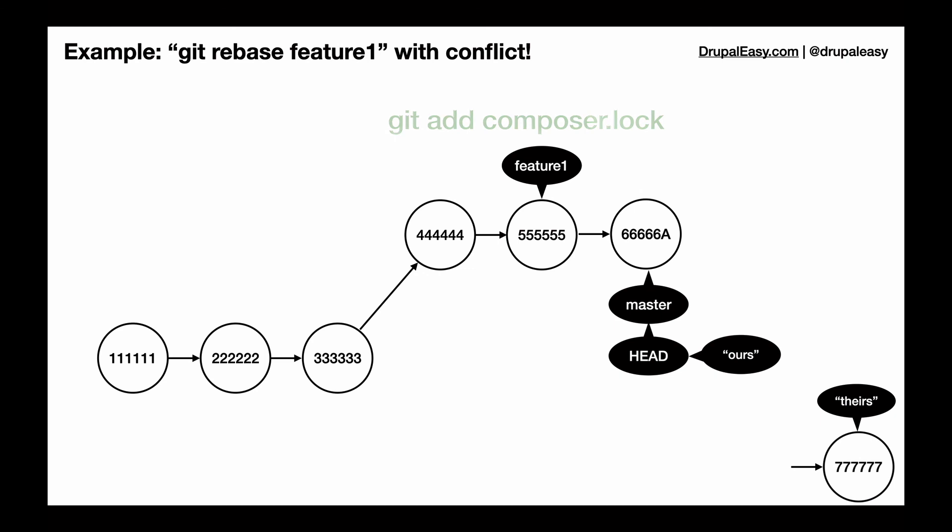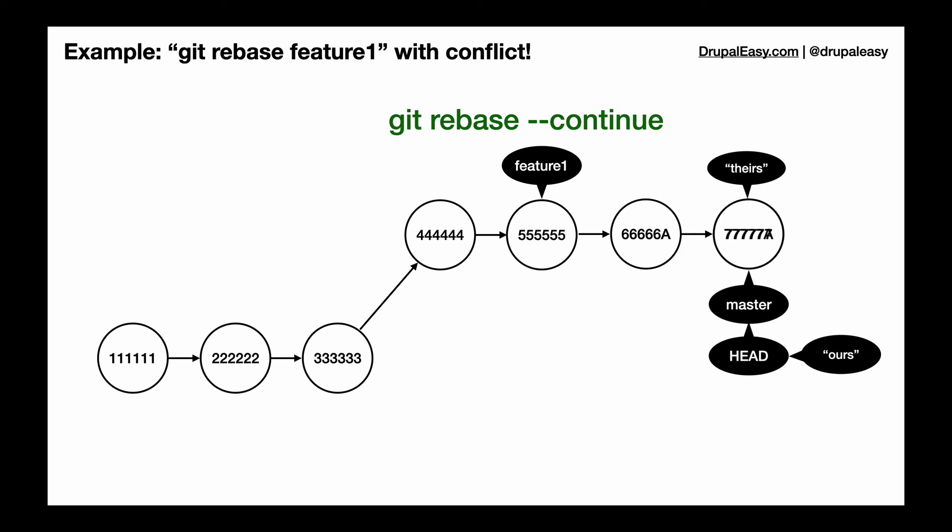And at this point we can just continue with our rebase and keep on applying the rest of our commits. They will change slightly, the actual data and the commit objects, because now the parent is slightly different. But for the most part they are very similar to what was originally in the master branch.